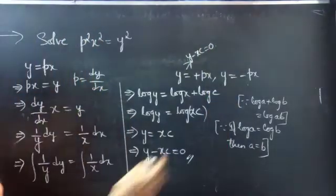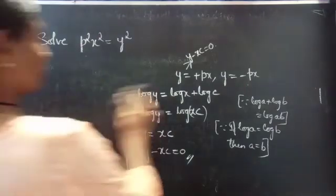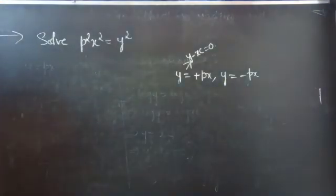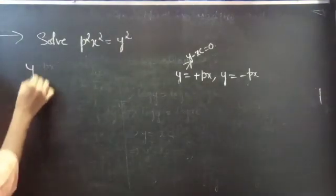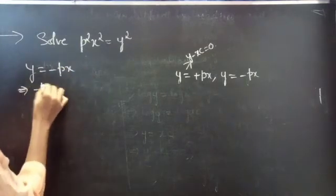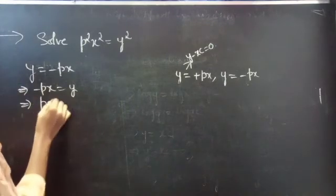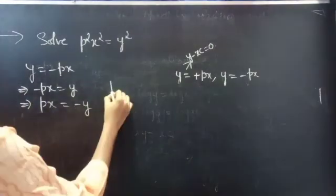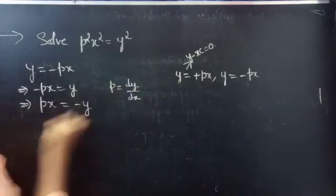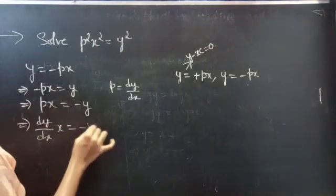Now we will find the solution for y equals minus px. Consider y equals minus px, or px equals minus y. Put p equals to dy/dx; then dy/dx times x equals minus y.